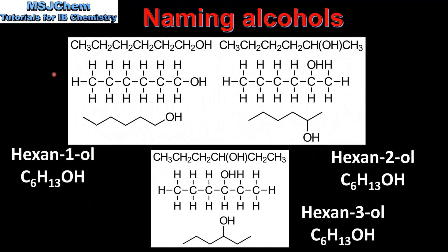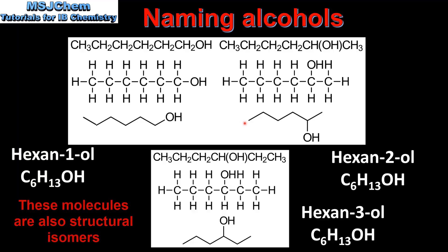Finally we look at alcohols with six carbon atoms in the longest chain. On the left we have hexan-1-ol, on the right we have hexan-2-ol, and at the bottom we have hexan-3-ol.